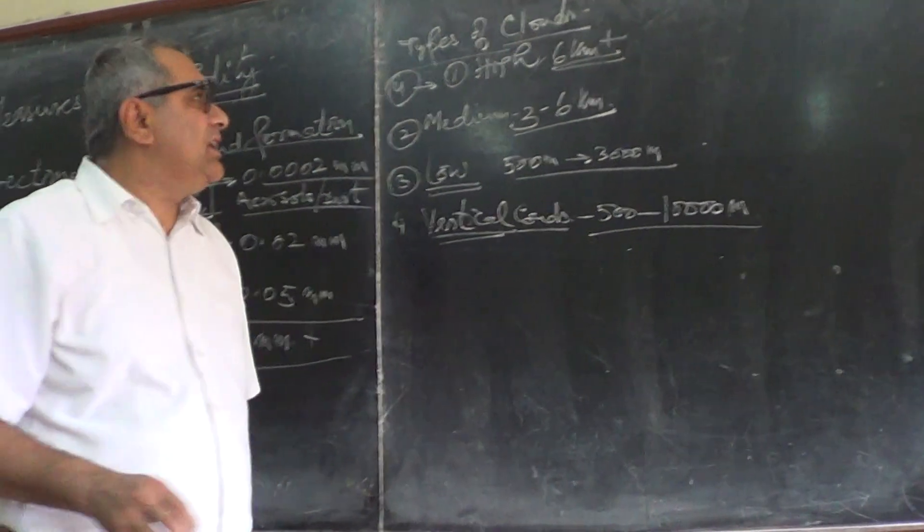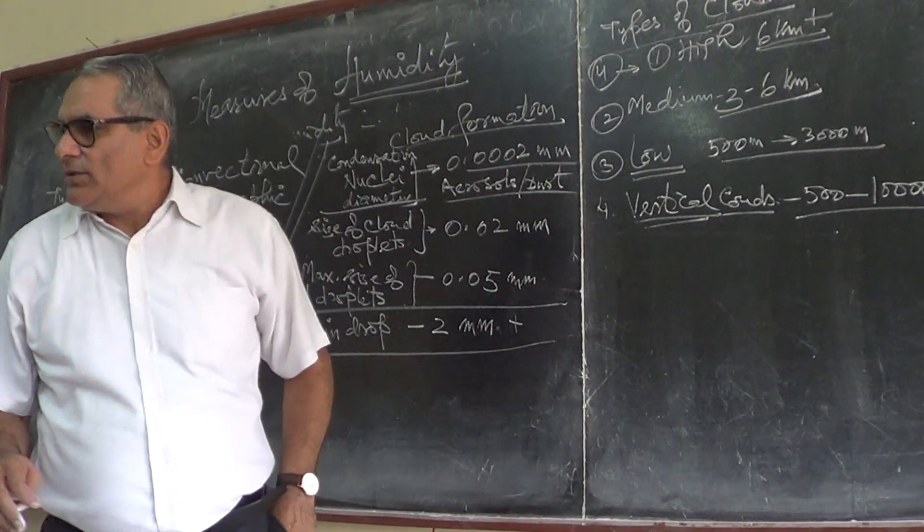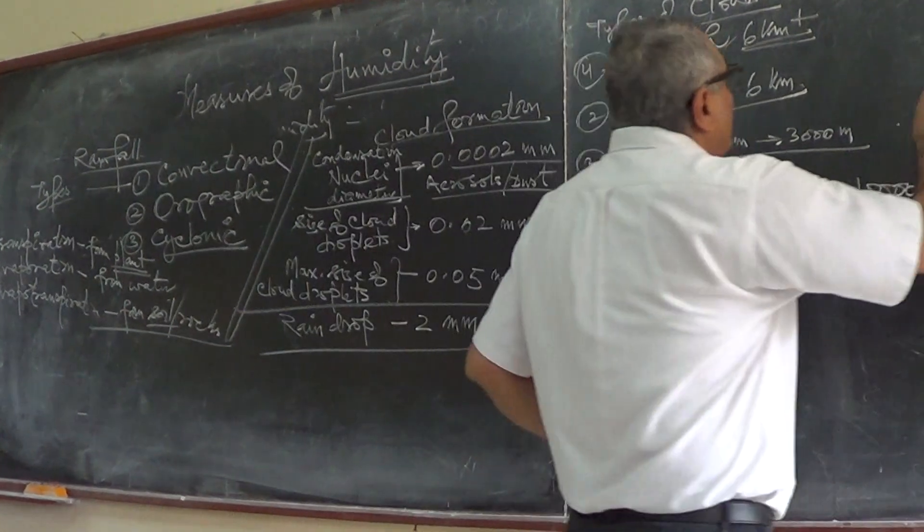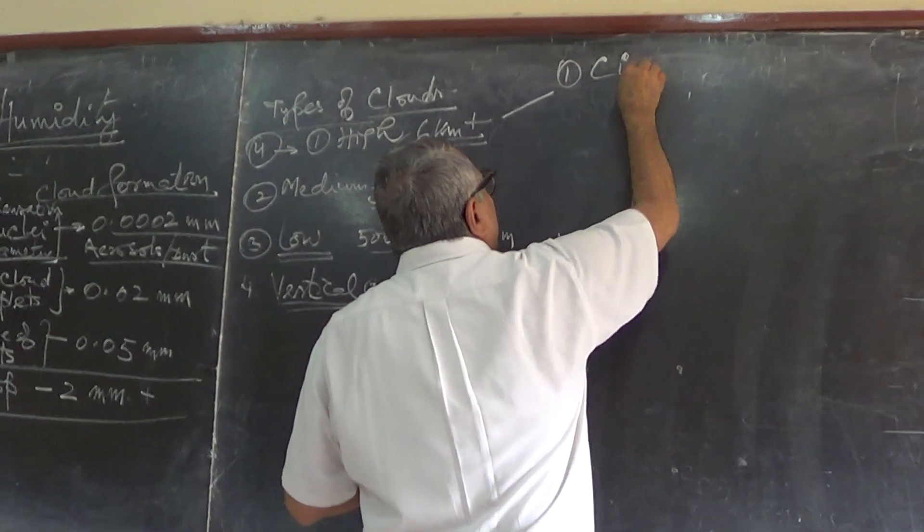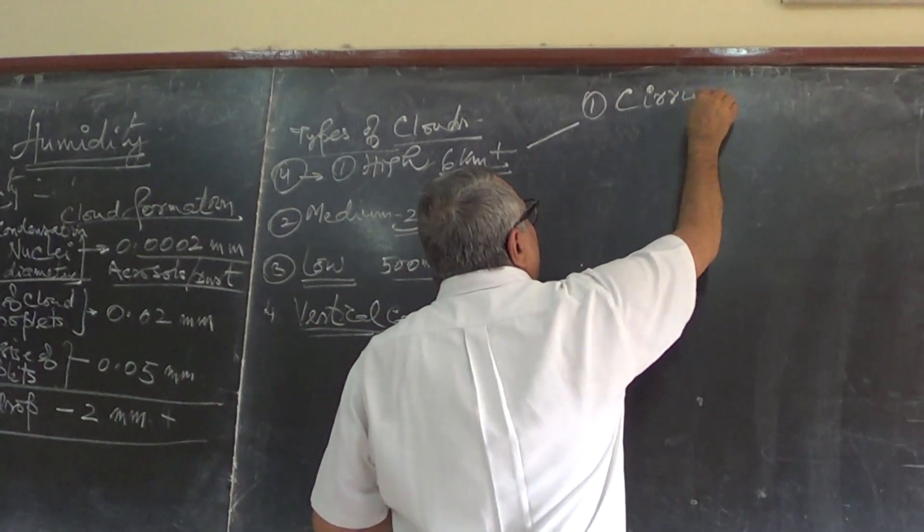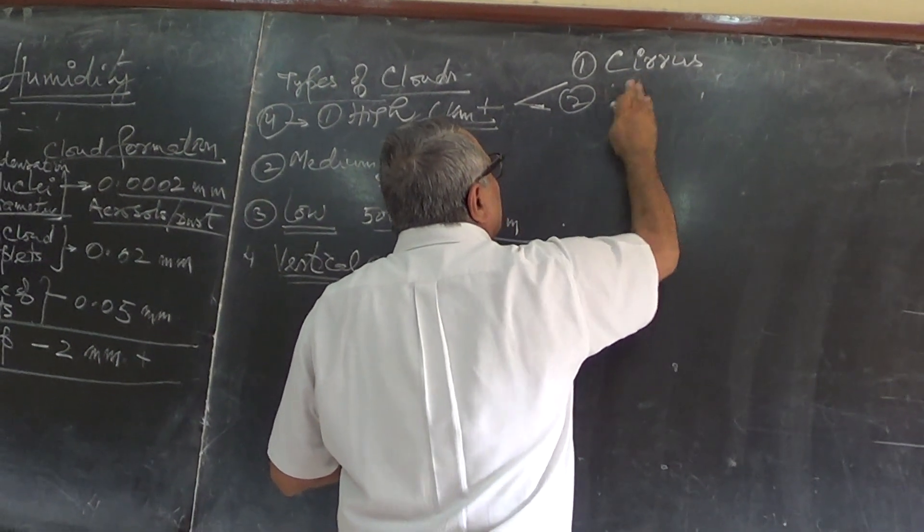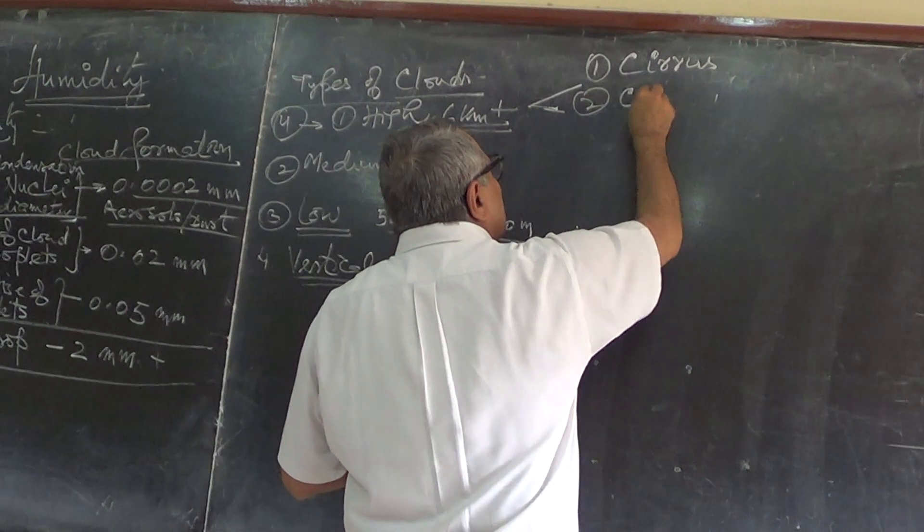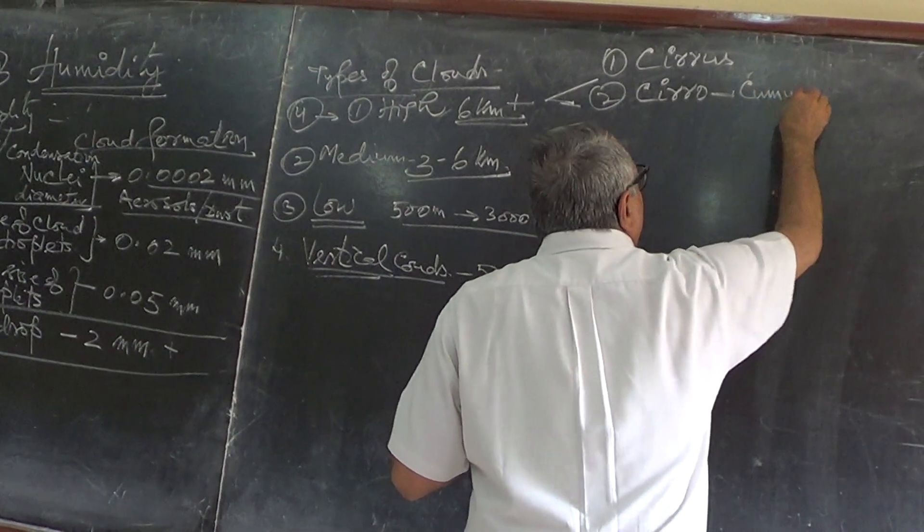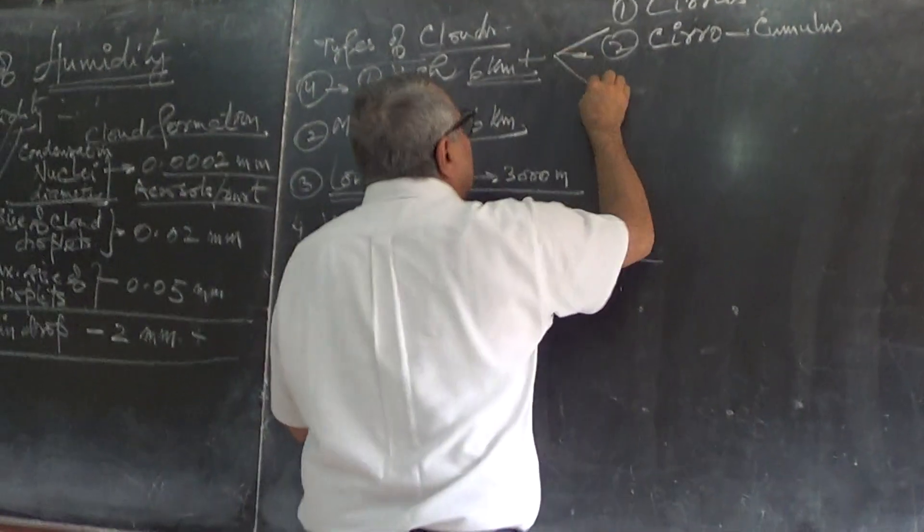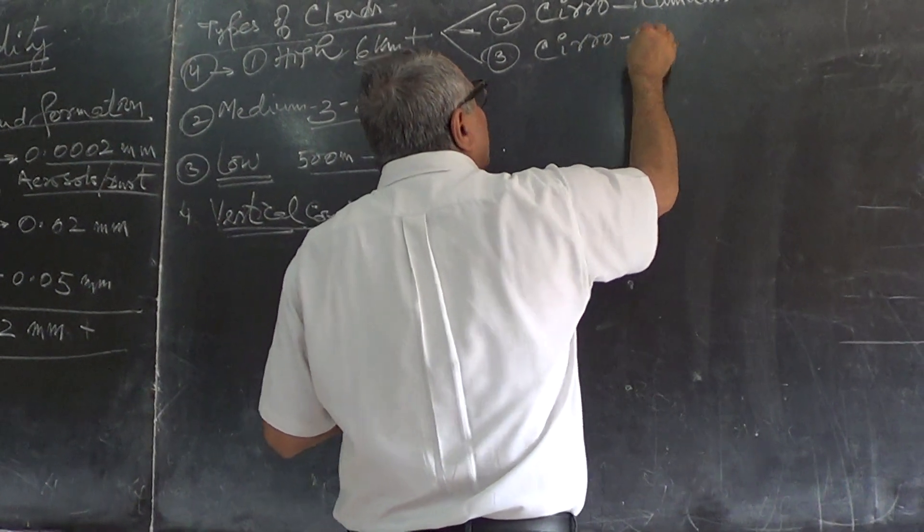We have three different types of high clouds. One is cirrus clouds. Then second type of clouds are called altocirrus. And third types of clouds are cirrostratus clouds.